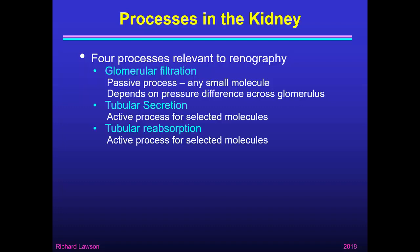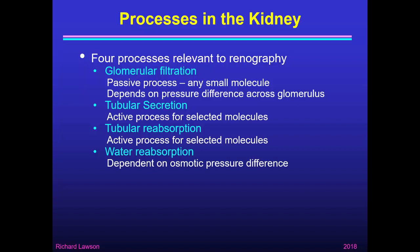On the other hand, tubular secretion and tubular reabsorption are active processes that only take place for selected molecules — molecules that the body wants to get rid of or to retain. Water reabsorption is also important, and this depends on the osmotic pressure difference between the tubules and the peritubular tissues. That osmotic pressure difference is created by concentration gradients due to molecules that have been reabsorbed. So it works in the opposite direction to the hydrostatic pressure in the glomerulus, extracting water out of the tubules.